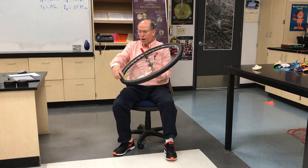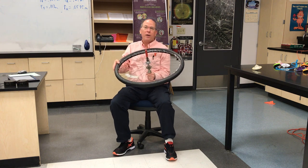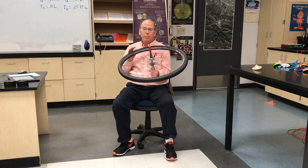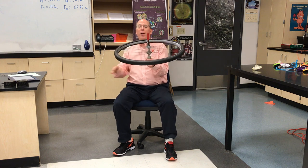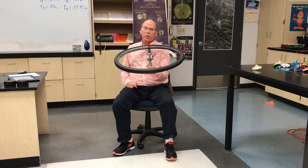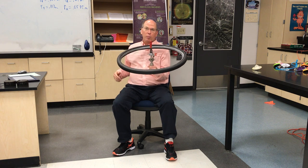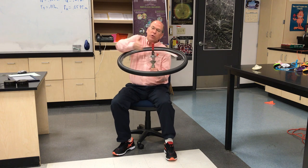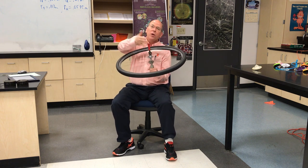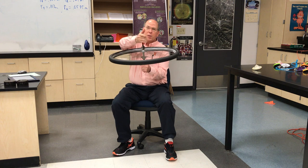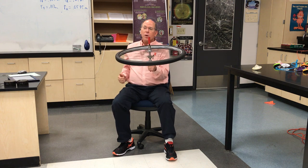I have this bicycle wheel — it's got lead weights around the side, so it has a lot of rotational inertia. I'll spin it like this and ask them what's the direction of the angular momentum. The way we practice the right-hand rule is: you curl your fingers in the direction of the rotation and your thumb points in the direction of the angular momentum.